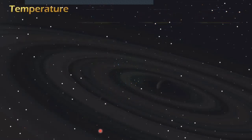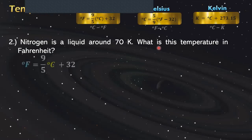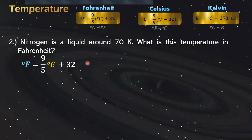Example number two: Nitrogen is a liquid around 70 Kelvin. What is this temperature in Fahrenheit? First, identify the unknown. The unknown is Fahrenheit, so we are going to use this formula. This problem is similar to our previous problem. We don't have a formula that we can directly convert Kelvin to Fahrenheit, so we are going to derive a new formula.